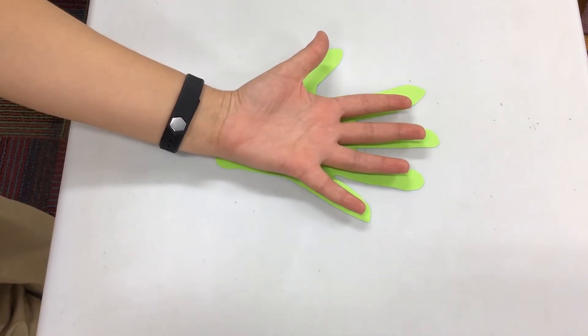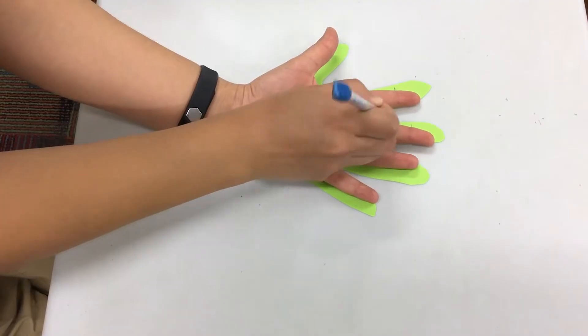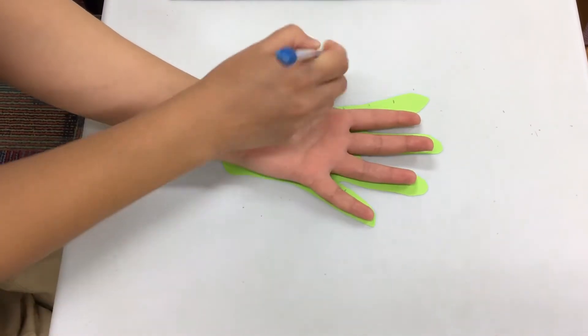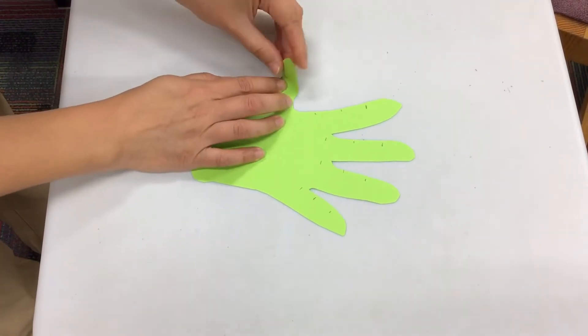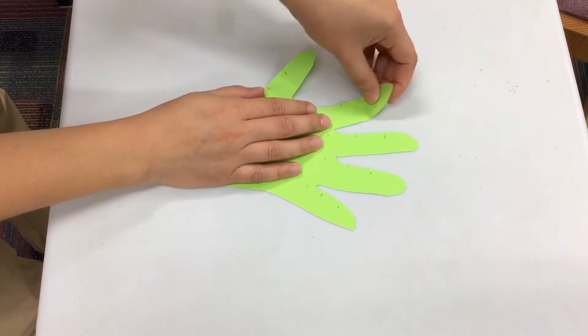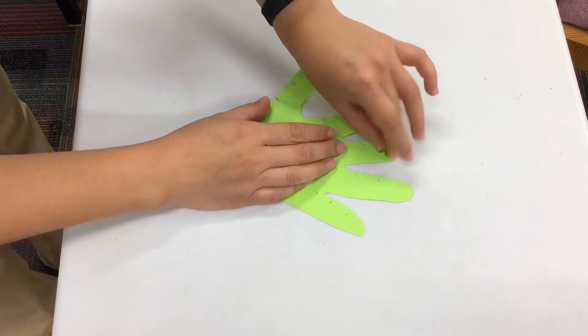Now place your hand on top of the paper hand and mark the locations of joints. If you'd like, before this step you could decorate the other side of the hand. Now fold the paper hand at the marked joint locations. Your robotic hand starts looking a little bit like your real hand at this point.